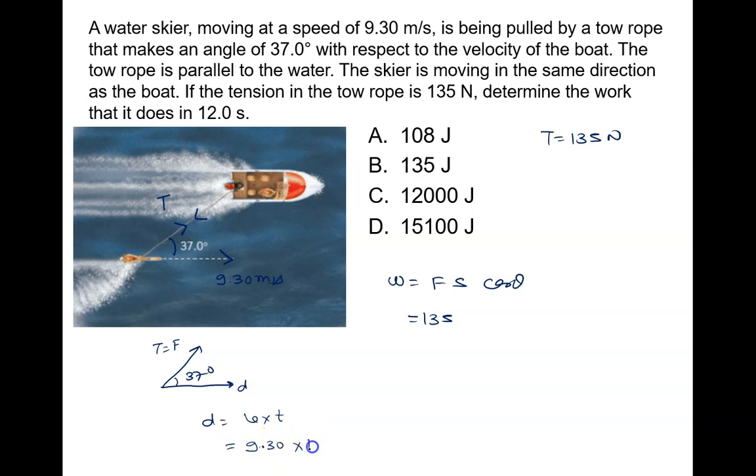The distance traveled is 111.6 meters. We write 135 times 111.6 times cos 37 degrees. Cos 37 is 4/5. Solving this, we get approximately 12,000 joules.